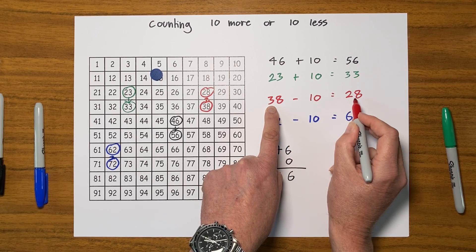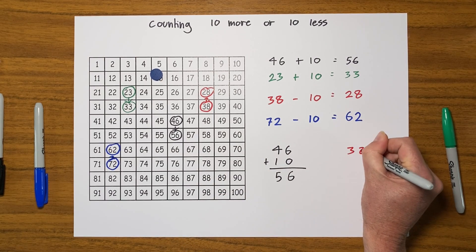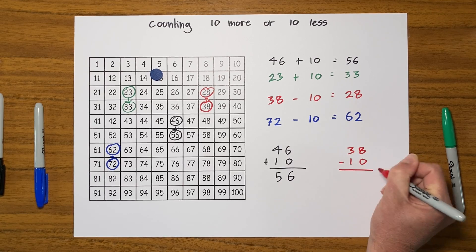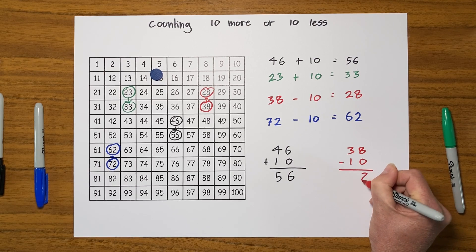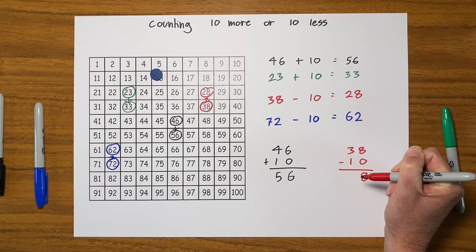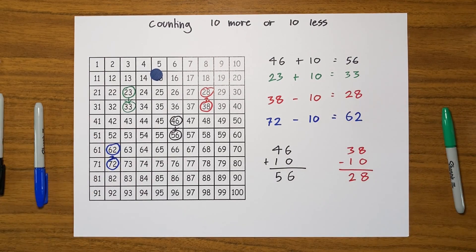And if I write that down like this: 38 take away 10, you can see 8 units take away no units will give me 8 units. 3 tens take away 1 ten will give me 2 tens. So different ways of doing the same thing.